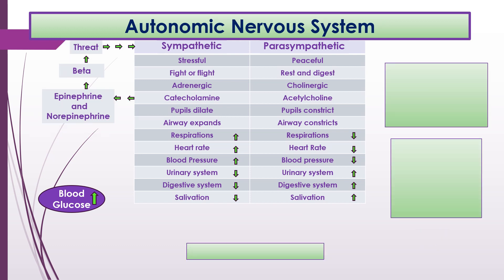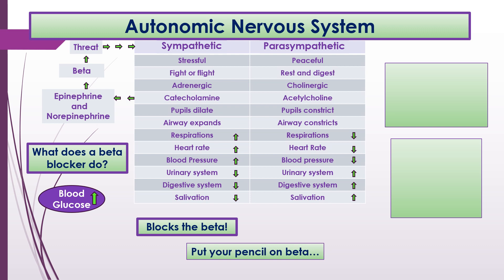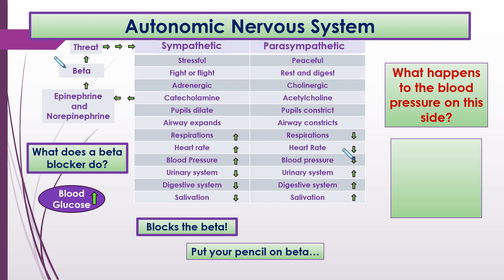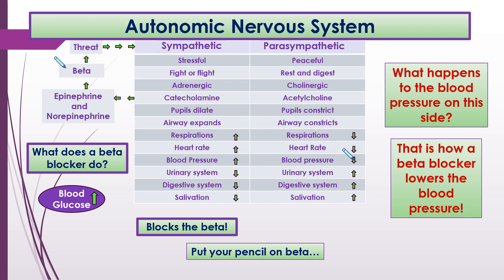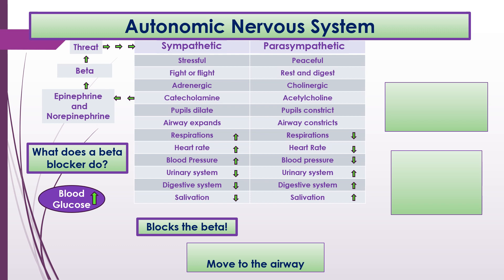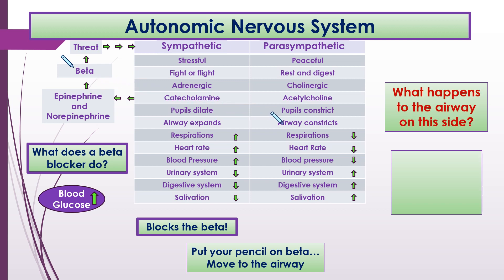Let's see how understanding the system helps us. Take a beta blocker — it blocks the beta. Put your pencil on beta and move to blood pressure on the parasympathetic side; the blood pressure goes down, and that's how a beta blocker lowers blood pressure. Similarly, put your pencil on beta and move to the airway on the other side — it constricts. That's why you need caution using a beta blocker with somebody who has asthma, as it can cause airway constriction.